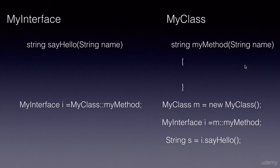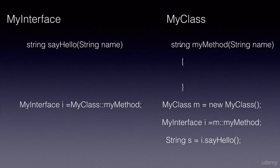In this lecture, you have learned that you can map method implementations to the methods in functional interfaces using the double colon operator. If you implement that method in your class as an instance method, you need to create an object and then do the mapping. If it is a static method, you can implement a static method as well — although the method in the functional interface is not static — and in that case, you use the class name to map.